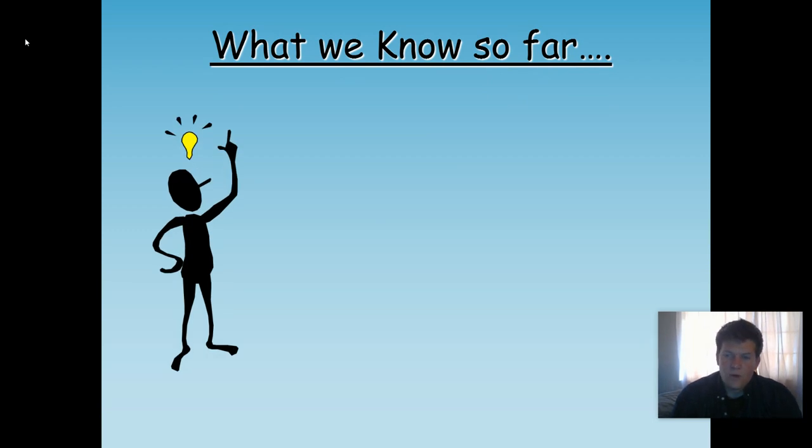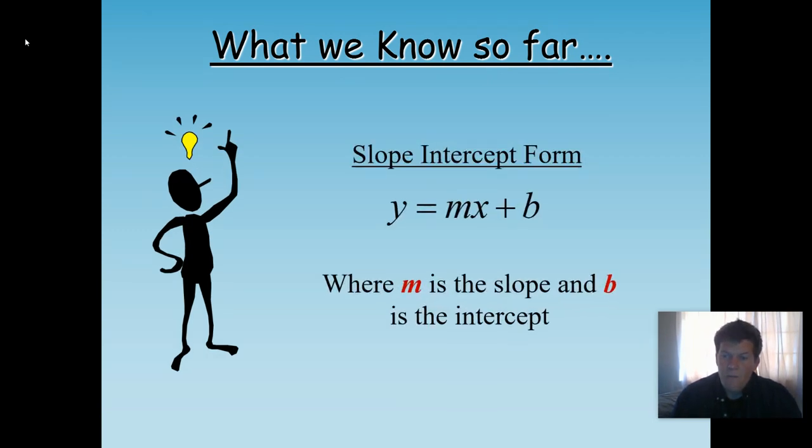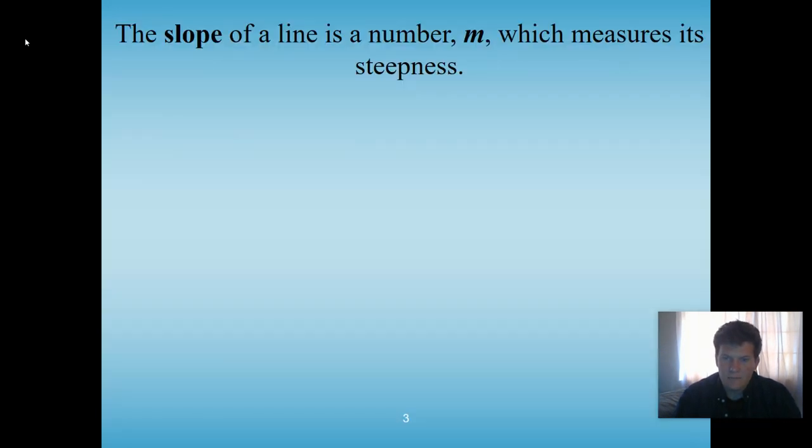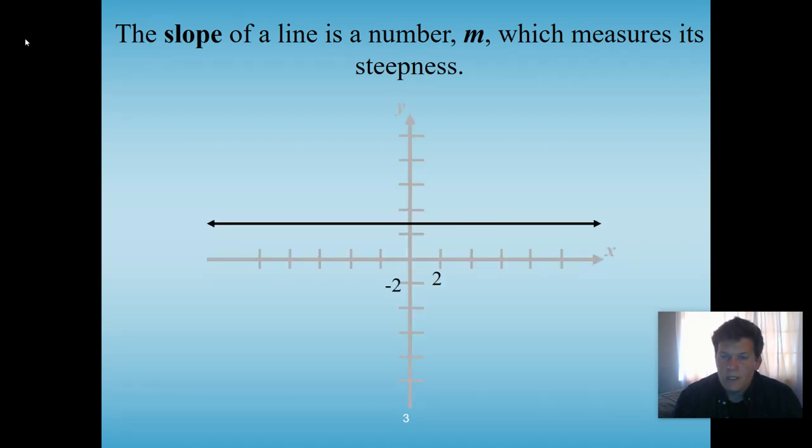Here's what we know so far. We know that slope-intercept form, y = mx + b, has m as the slope, b as that y-intercept, m as that movement, b as that beginning. Now, the slope of a line is that number m, which measures its steepness.